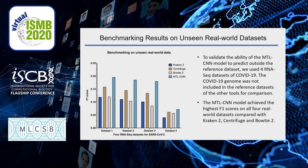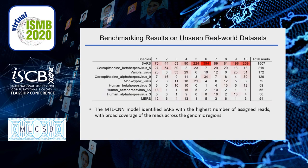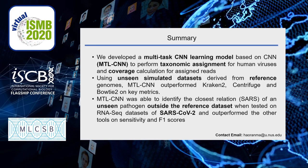We also did benchmarking work on an unseen real-world dataset, which are four RNA sequencing datasets for COVID-19. From the results, we can see that the F1 score of MTL-CNN outperformed Kraken-2, Centrifuge, and Bowtie2. Besides, from the coverage report, we can see that MTL-CNN identified SARS-CoV-2 with the highest number of assigned reads with broad coverage of the reads across the genome regions.